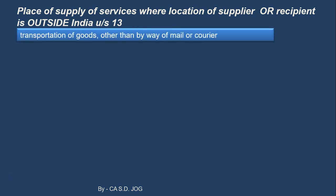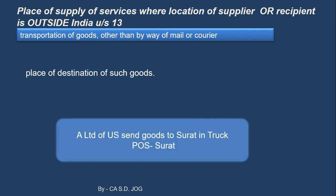Next: transportation of goods, other than by way of mail or courier. So for mailing or couriering services, this clause is not applicable. But if you are transporting goods, then the place of destination of such goods — where these goods are ultimately delivered — is the place of supply of services. Take an example: A Limited of USA is sending goods to Surat in a truck. They have appointed somebody at Mumbai port; from Mumbai port, these goods are loaded in a truck and sent to Surat. So that transportation of goods will be covered under this clause. The final destination is Surat, so for A Limited of USA, the place of supply of services will be Surat.